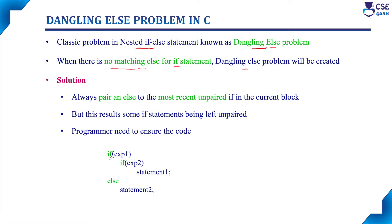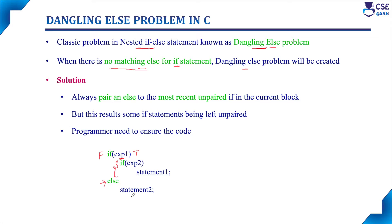Consider this example: if expression 1 is evaluated and it is true, it has to execute this part — that is, if expression 2 and statement 1. Suppose if this expression is evaluated to false, it has to go to the else part and execute statement 2. This is the actual intended logic of this if-else statement.